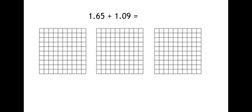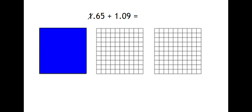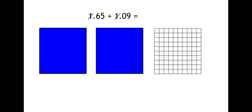When we look at our grid, we're going to try and make a whole. I see that I have one whole. I'm going to mark that one off. I see another whole already. I'm going to mark that one off. So we have two wholes shaded.